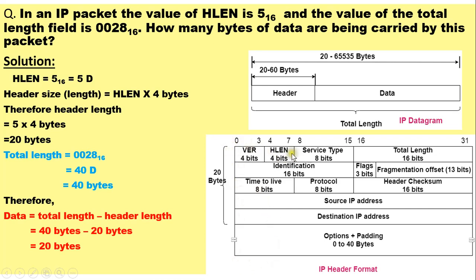The maximum HLEN value of F (15 decimal) gives a maximum header size of 60 bytes. We are provided with the HLEN field value and the total length field value to calculate the data bytes. The HLEN value is given as 5 in hexadecimal, which is also 5 in decimal. Therefore the header length will be HLEN multiplied by 4 bytes, since the header size is always in multiples of 4 bytes.